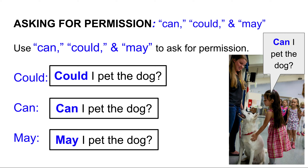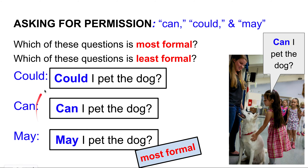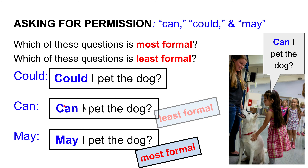For example, this little girl wants to ask her teacher if she can pet the dog, so she asks 'can I pet the dog?' Which of these modals is most formal and which is least formal? The most formal modals are 'may' and 'could.' We use 'could' and 'may' when talking to bosses, teachers, or strangers. 'Can I pet the dog?' is the least formal — we use 'can' with friends, children, or people at the same level.